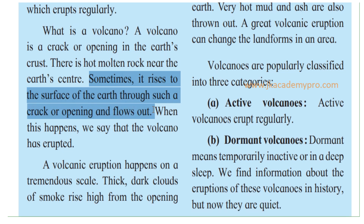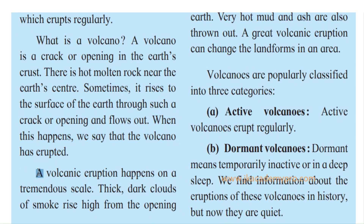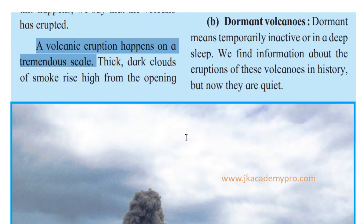Sometimes the molten rock rises to the surface of the Earth through such a crack or opening and flows out. It is so hot, so much gas forms and so much pressure builds up underneath that the molten rock tries to push open the Earth's crust. The crust cracks open and this molten rock comes out. When this happens, we say that the volcano has erupted.